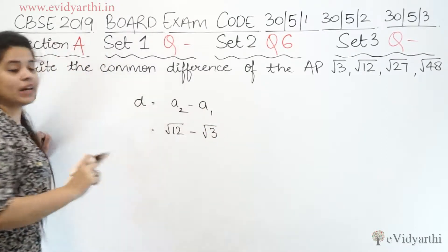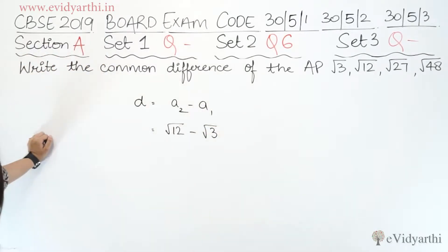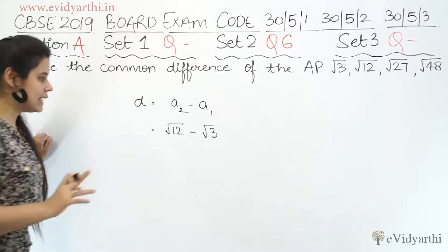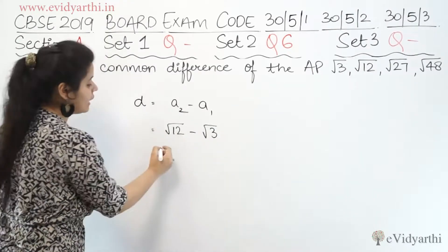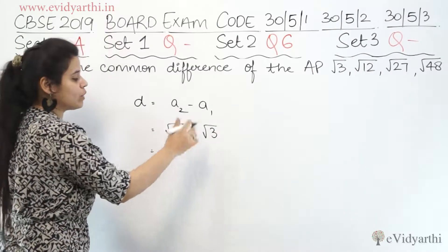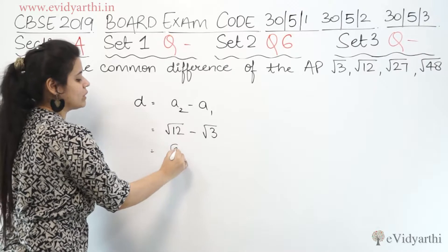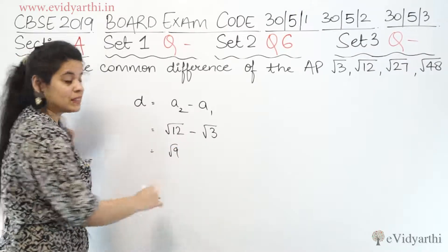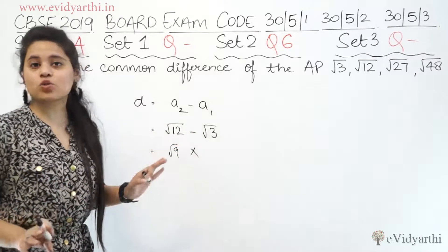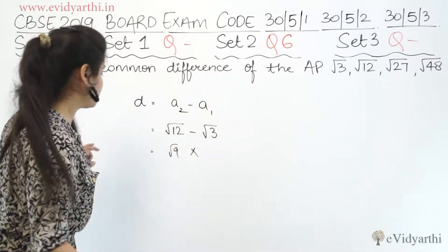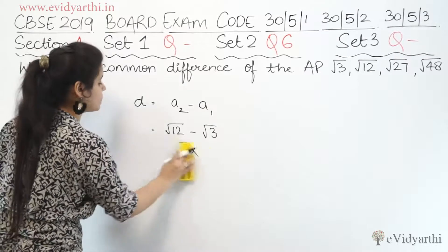√12 and √3 cannot be subtracted directly. Some students think that since both are under a root, they can subtract 12 minus 3 to get √9 — but this is wrong. You cannot subtract them directly inside the root like that.